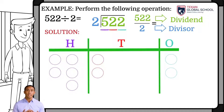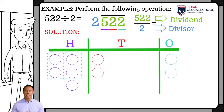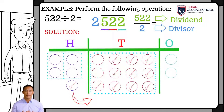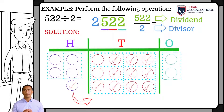The operation indicates that we must divide by 2. Therefore, first select the 100s elements in groups of 2. In this case, there is an element of 100 left over. Therefore, we break it down into 10 10s and include those elements in the corresponding section. Likewise, we select elements, but now from the 10s in groups of 2. Since there are no 10s left, select elements in groups of 2 in the 1s. Once the elements are grouped according to divisor 2, let's count the groups of 100s, 10s, and 1s.